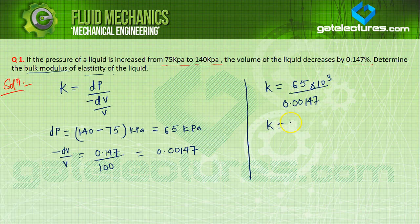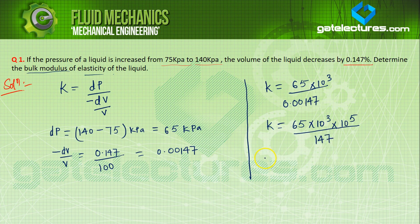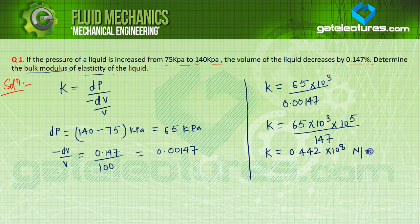K = 65 × 10³ into 10 raised to the power 5 upon 147. This is approximately equal to K = 0.442 × 10⁸ newton per meter square, which equals 0.0442 GPa.